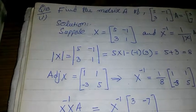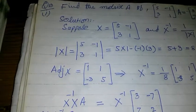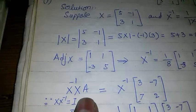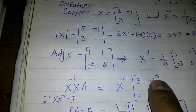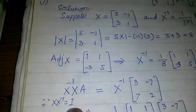Now, X inverse times X times A equals X inverse times [3, -7; 7, 2].